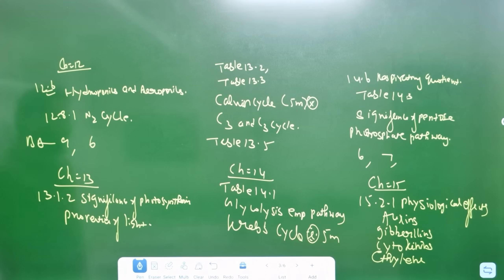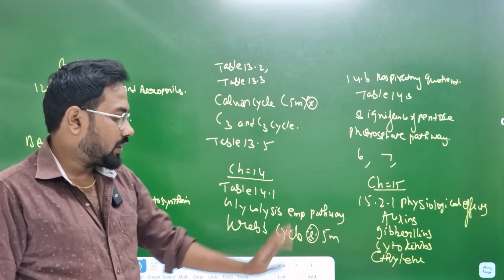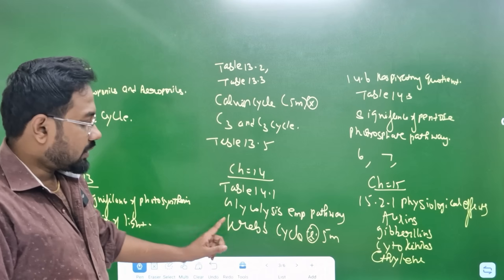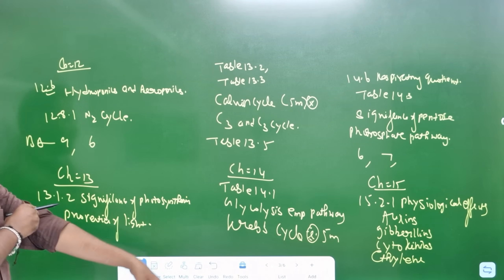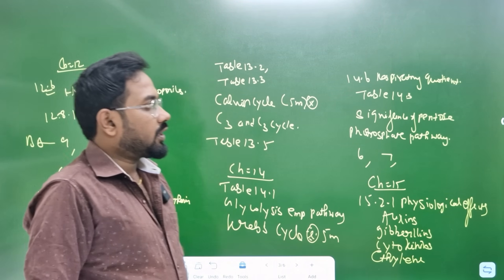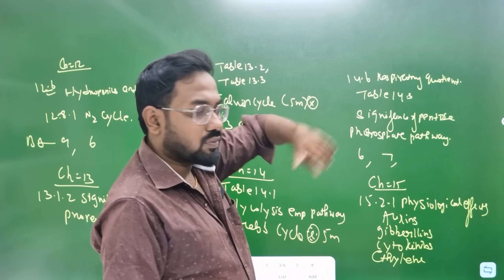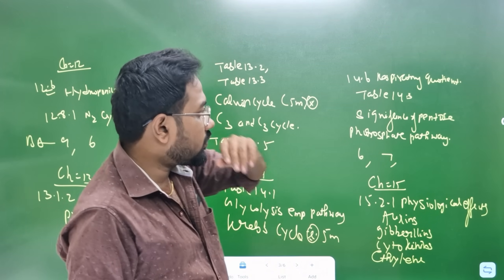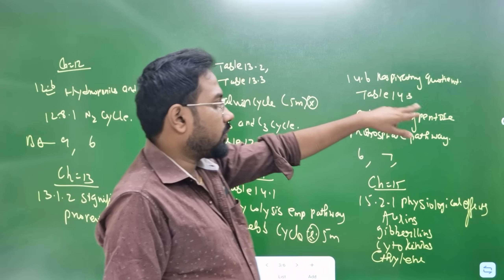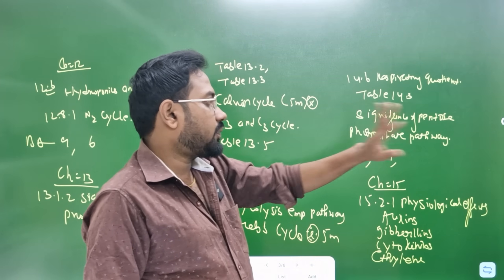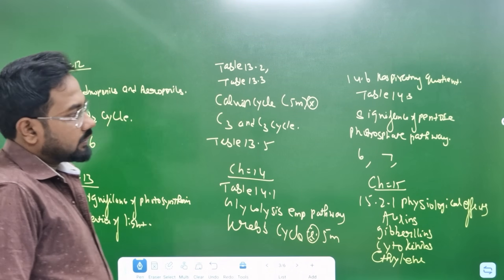Table number 14.5. Glycolysis — EMP — 5 marks. Krebs cycle. Citric acid cycle — 5 marks. Respiratory question — section 5. Section 14.6, definition, significance. Table number 14.5. Significance of pentose phosphate pathway. Bookpack.